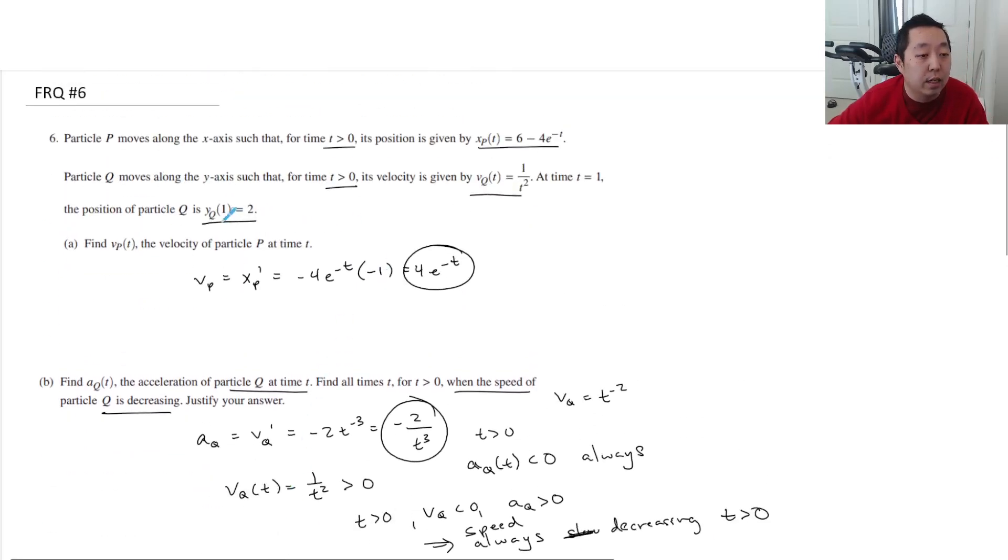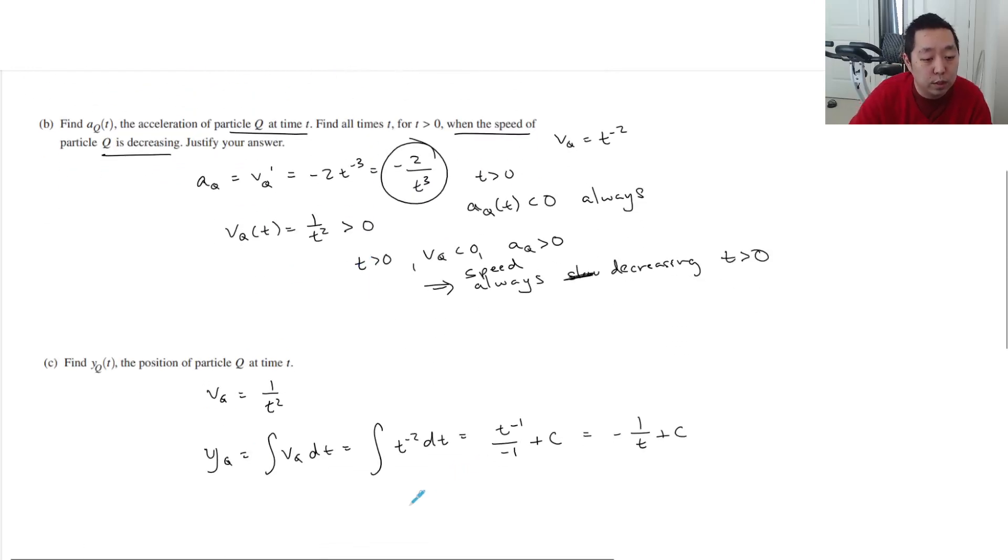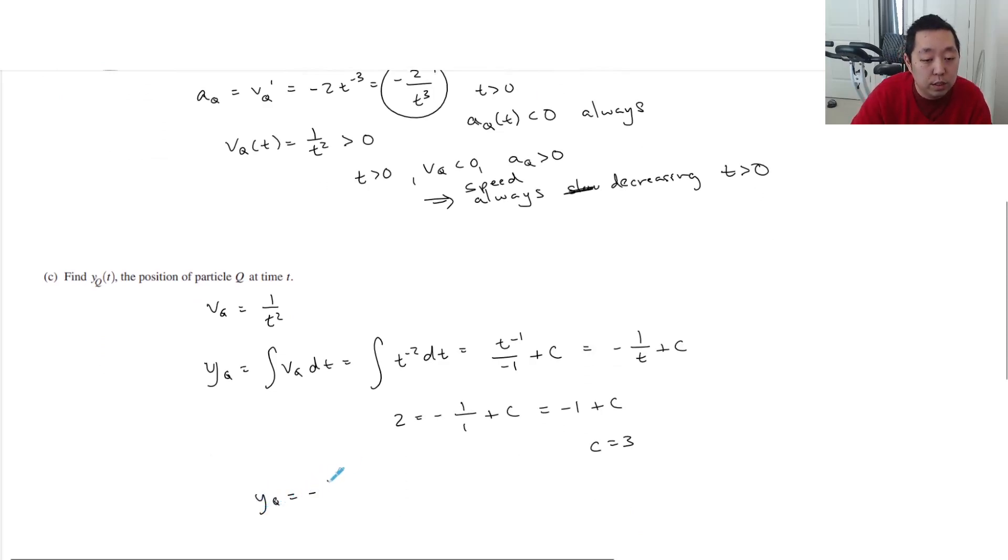Now how do I find the value of c? I know that at time t equals 1, Y equals 2. So I know 2 is equal to negative 1 over 1 plus c, which is negative 1 plus c. So then c is equal to 3. So then Yq is equal to negative 1 over t plus 3.